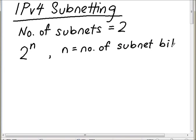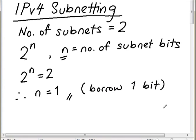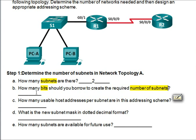We need 2 subnets, so we set 2 to the power of n equal to 2. We know that 2 equals 2 to the power of 1, so therefore n equals 1. We need to borrow a total of 1 bit from the host portion.